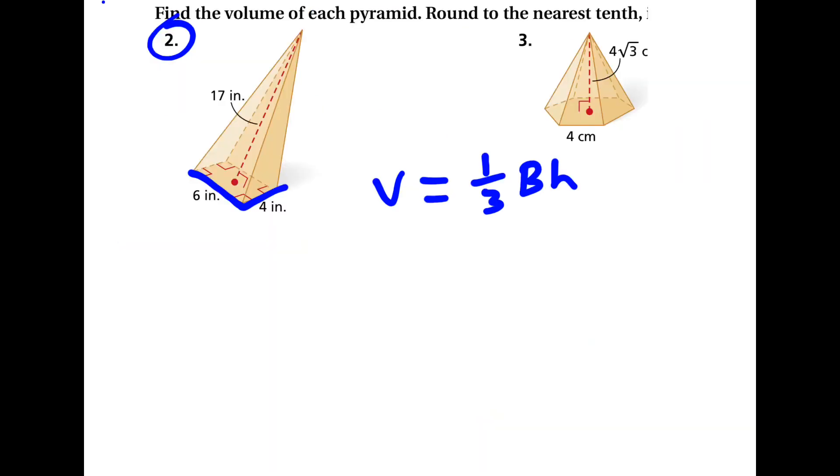For number 2, we're finding the volume of a pyramid. So our formula is one-third times the area of the base times the height. To find the area of the base, that's what the capital B represents, we figure out what shape this is. Here it's a rectangle, so we use length times width to figure out the area. So we can replace that capital B with 24.